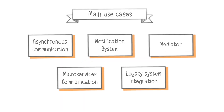RabbitMQ is particularly suitable for asynchronous communication, where tasks are processed in the background while the main application continues to respond to requests. It also offers storage when no consumer is available to receive the message, and it acts like a notification system by routing messages in real time.